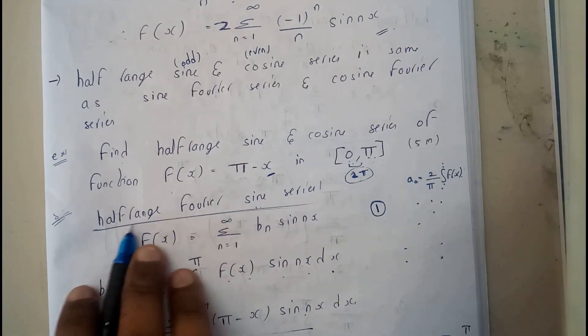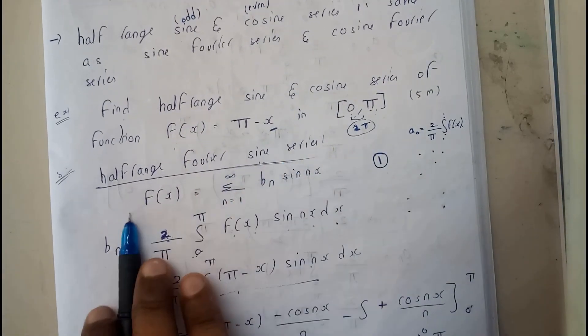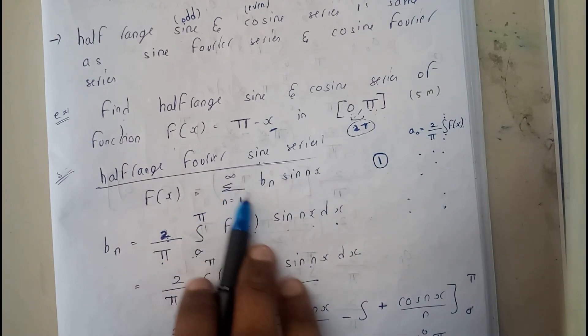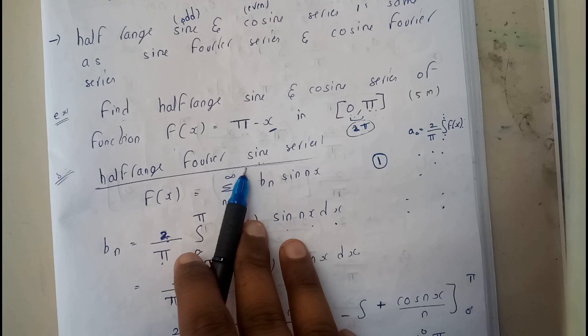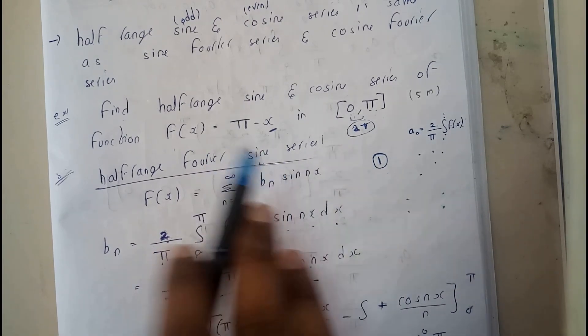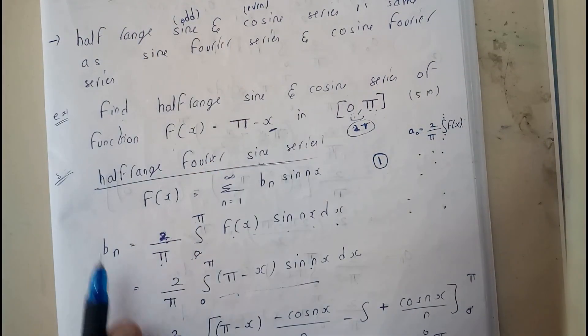So basically half range Fourier series is f(x) = Σ(n=1 to ∞) bₙ sin(nx). We will be finding sine. Sine is an odd function, so odd function will be having only one term, that is bₙ.